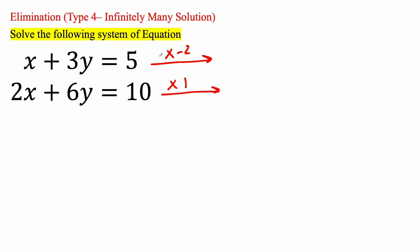So x times negative 2 is going to give us negative 2x. 3y times negative 2 is going to give us negative 6y. 5 times negative 2 is going to give us negative 10. And then this equation right here, nothing changes because we're multiplying by 1. So we get 2x plus 6y is equal to 10.